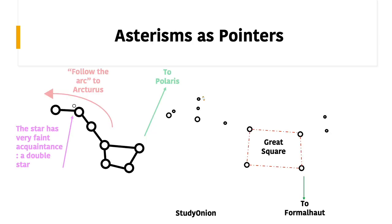You also need to know which asterisms are used as pointers — meaning we look at the asterism and use it to locate another star by following the direction it points. The Plough asterism is used as a pointer for two different stars. Firstly, following the direction shown on screen, you can find Polaris, also known as the North Star. Secondly, by following the arc of the Plough, you can find Arcturus.